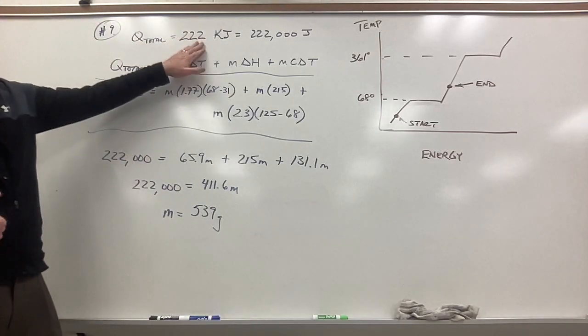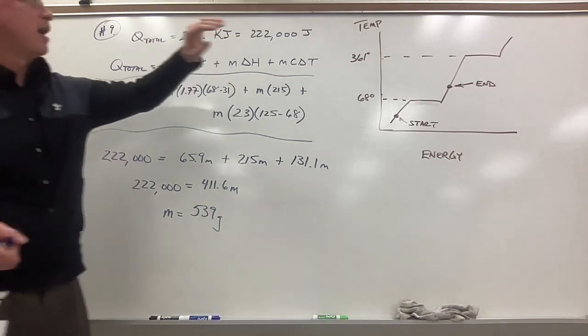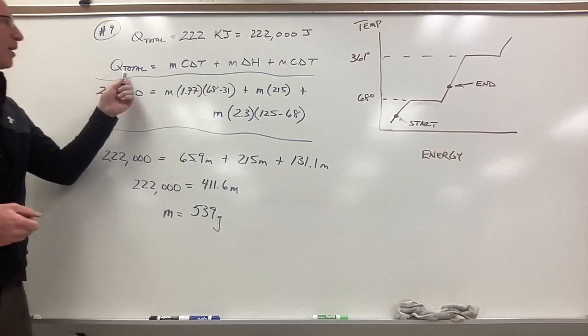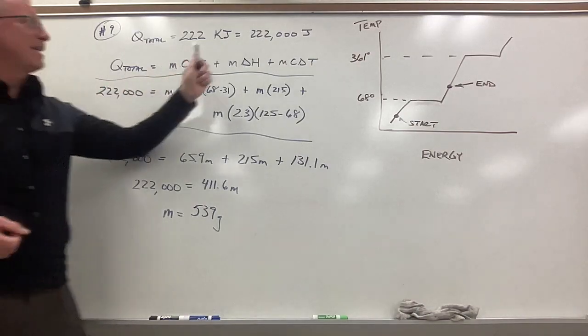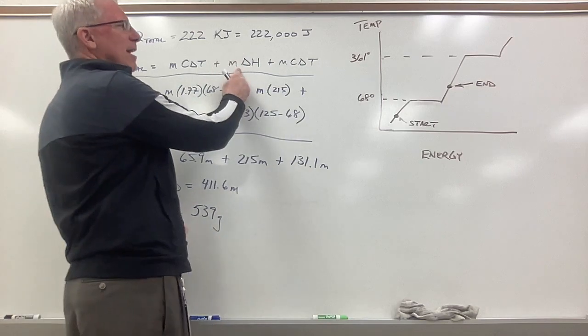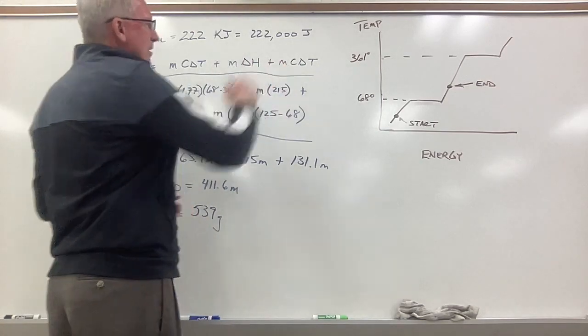So we know our total energy is 222 kilojoules, which is 222,000 joules, and we know that our total energy has to go into three steps: heating us up, melting the wax, and then heating up the wax.